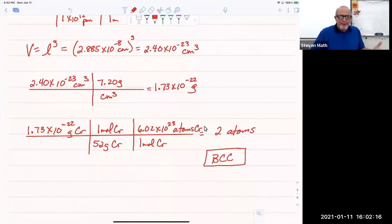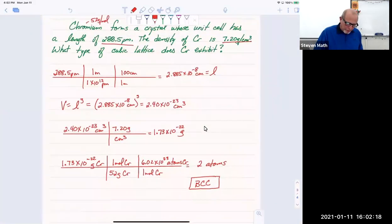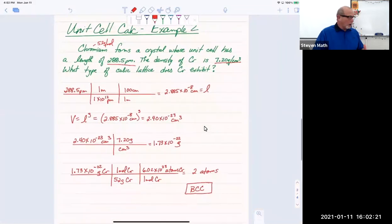There's no way to look at the periodic table and tell this. I wish there was a way we could say, oh, well, it's chromium. It's in this location. So that tells me it's going to be body-centered cubic or face-centered cubic. There's just no way of knowing without doing these types of calculations.